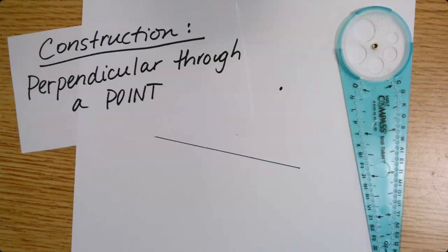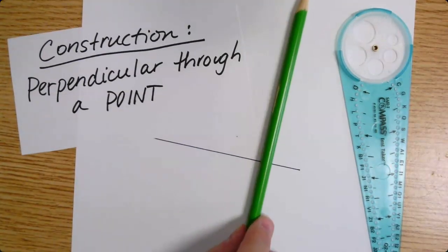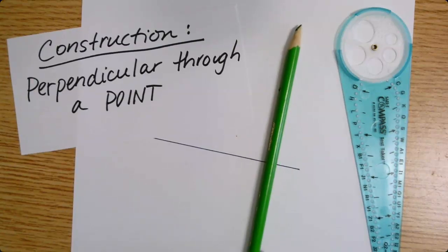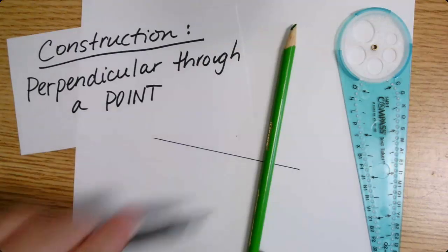A perpendicular, meaning a segment that is perpendicular to another segment or line through a particular point. So I'm going to be making a segment that goes through that point and is perpendicular, meaning it makes a right angle with this line down here.